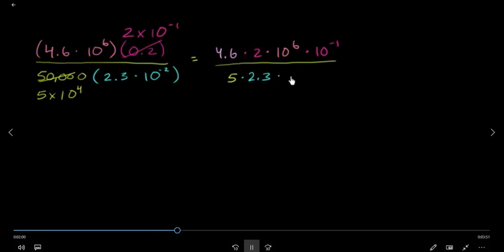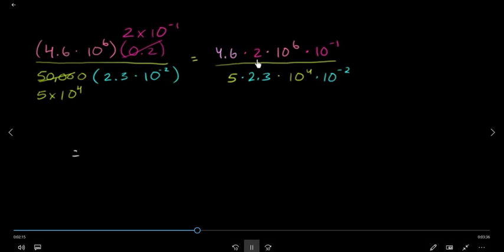He took 5, 2, 3, and 4. Then he took 10, minus 2. That's why we had a lot of food. He took 4, 6, 9, 2.